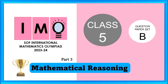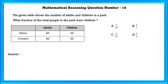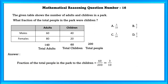Class 5 IMO Set B. Mathematical reasoning question number 16. The given table shows the number of adults and children in a park. What fraction of total people in the park were children? To find the fraction, we first find the total of adults and children, which is equal to 200. The fraction of children is equal to 60 by 200, which simplifies to 3 by 10.